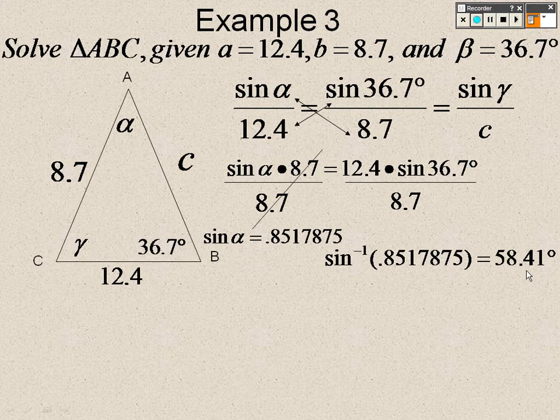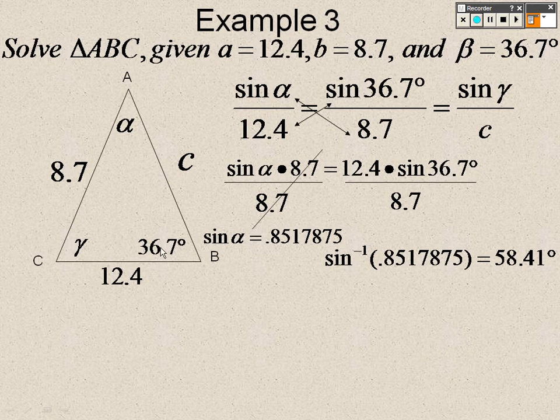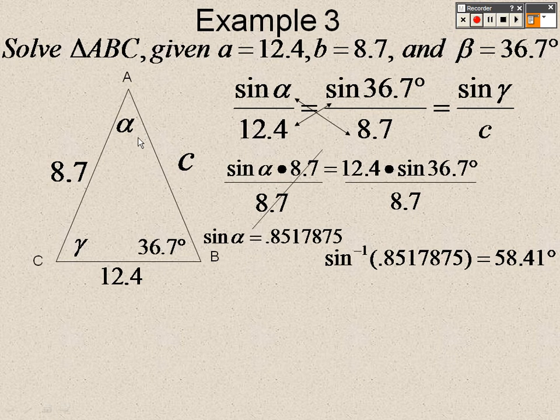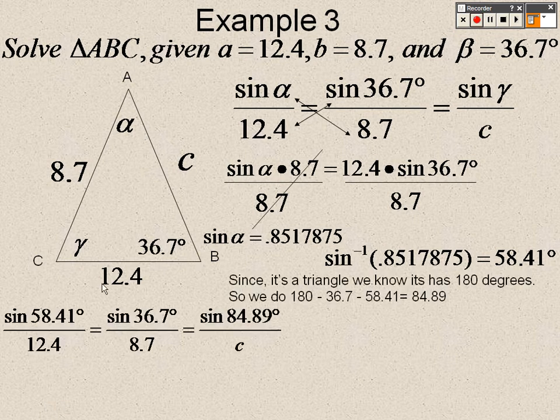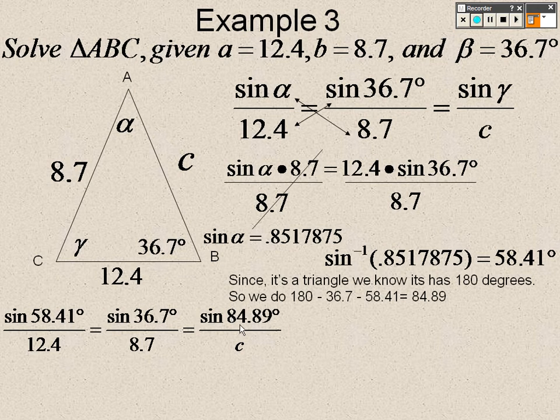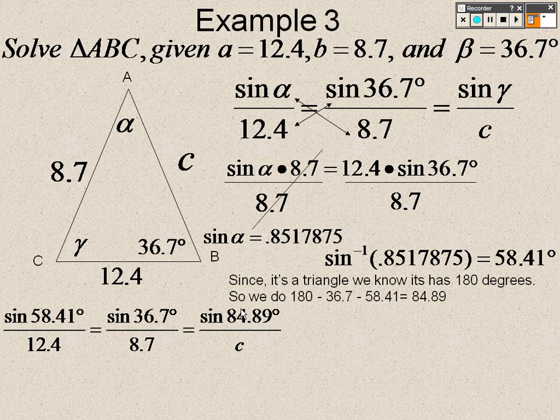The reason why this is helpful is if this is 58.41 and this is 36.7, I know that a triangle has 180 degrees. So I can take 180 and I can subtract the 58.41 and the 36.7 away from it. So now I know that this angle down in here is the 84.89. So now I know both of these. Now I know both of these and the only thing missing left is C.